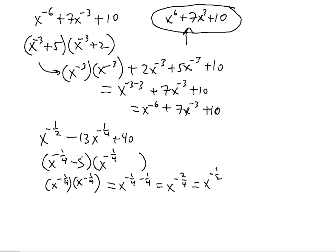So we can write (x^(-1/4) - 5)(x^(-1/4) - 8). We already verified the first term gives x^(-1/2). The outer and inner steps combine the like terms to give -13x^(-1/4), and the last step gives positive 40. This checks out. See you in my next video — thanks for watching!